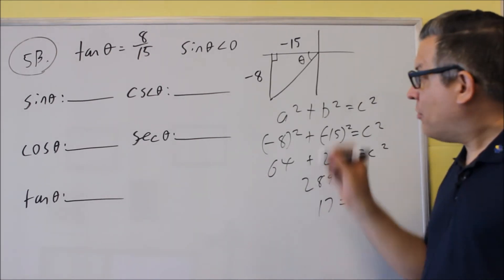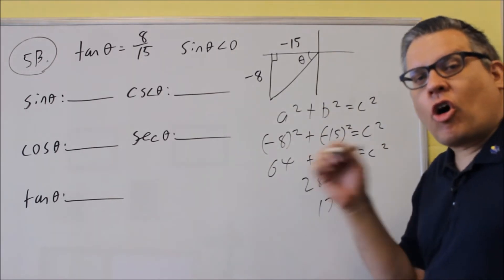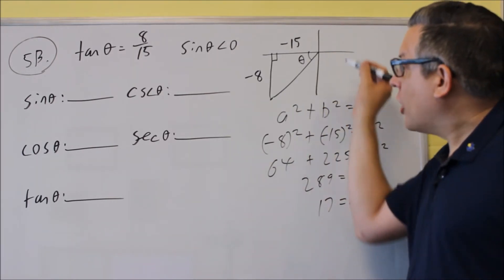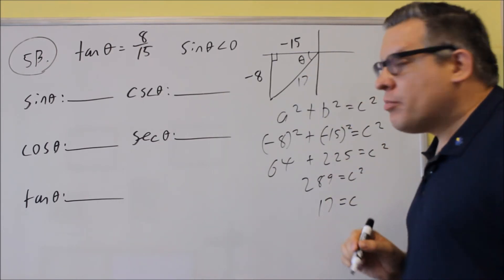And remember, you're going to get plus or minus on that. But if you have a hypotenuse, hypotenuse is always positive regardless of what quadrant you're in. So it's positive here. We're going to use positive 17.